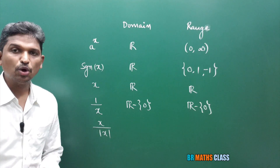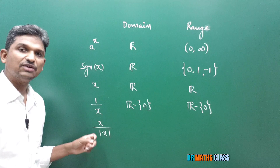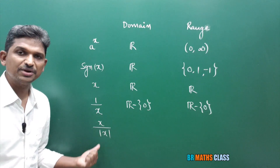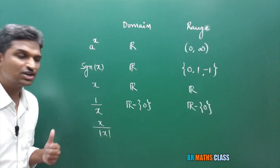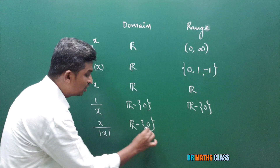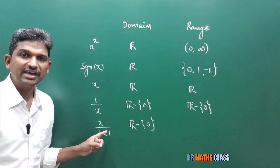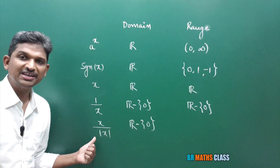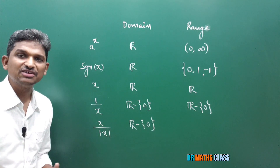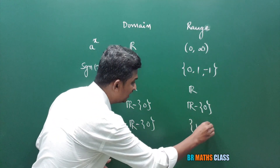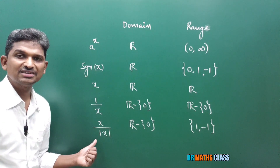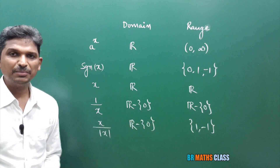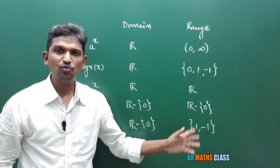Finally, f(x) = x/|x|. Since the denominator is |x|, x cannot be 0 (otherwise the denominator is 0). So the domain is all real numbers except 0. When x > 0, x/|x| = x/x = 1. When x < 0, x/|x| = x/(−x) = −1. So this function gives only +1 or −1, meaning the range of x/|x| is {1, −1}.